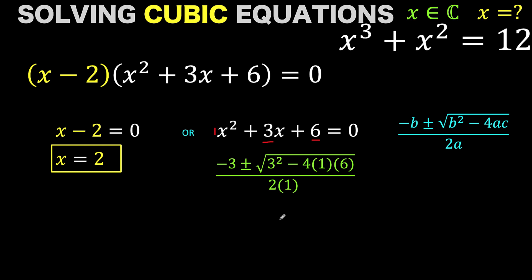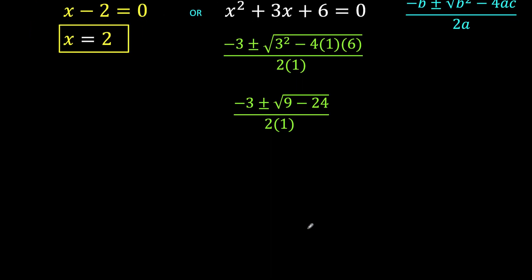From here, it's just a matter of arithmetic computation. So 3² is 9, 4 times 6 is 24, 2 times 1 is 2. But 9 minus 24 is a negative number under the radical sign, which results in an imaginary number. So we can write this as the square root of 15 times i, or i times the square root of 15. That is because this -15 can be written as -1 times 15, and that is under the square root symbol. And the square root of -1 is now this i, and the square root of positive 15 is this part.